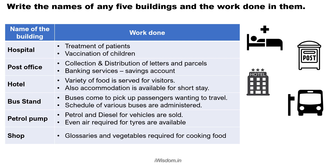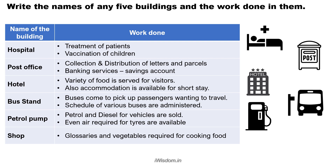Bus stand — at the bus stand, passengers come to board the buses for various destinations; drivers and conductors also get their instructions and schedules here. Petrol pump — petrol and diesel for various transport vehicles are sold here, and even air required for tires is filled through the air pump. Shop — you can buy groceries and vegetables required for cooking.